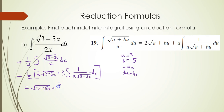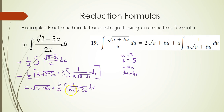So we have plus 3 halves times the integral of 1 over x times the square root of 3 minus 5x, dx. We like the square root of 3 minus 5x term, but we do have another integral to evaluate.